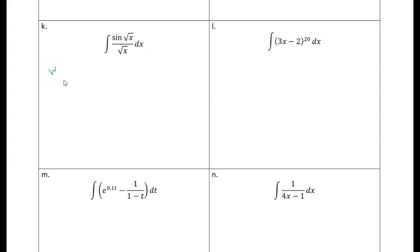So I'm going to let w equal the inside function, which is the square root of x. And then dw is equal to one-half. This is the same thing as x to the one-half, so when I differentiate both sides, I get one-half x to the minus one-half dx.